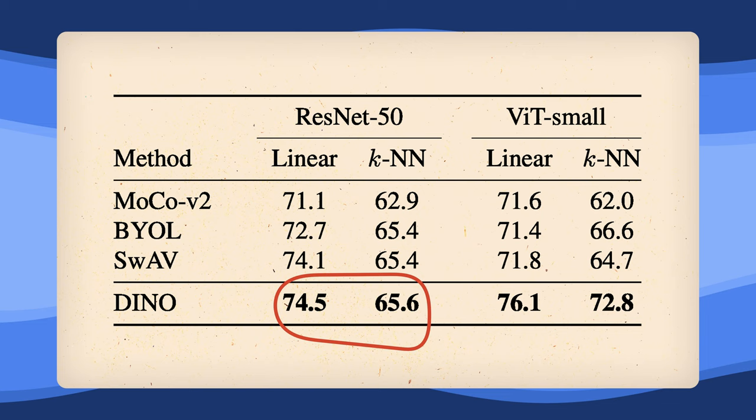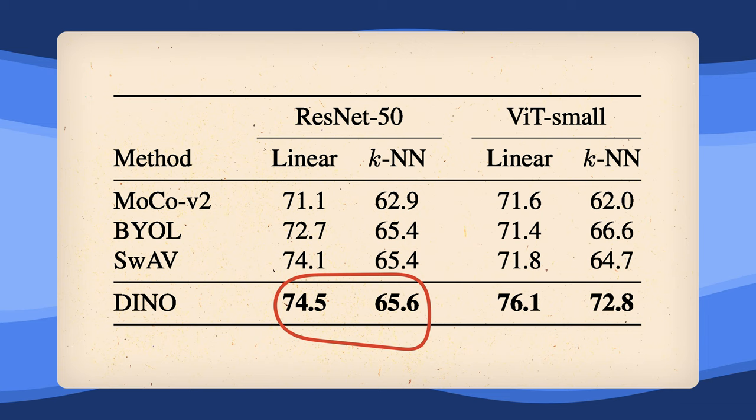However, when replacing the ResNet architecture with a vision transformer, DINO unleashes its potential and outperforms other baselines significantly. Especially in the case of KNN's neighbor classification.